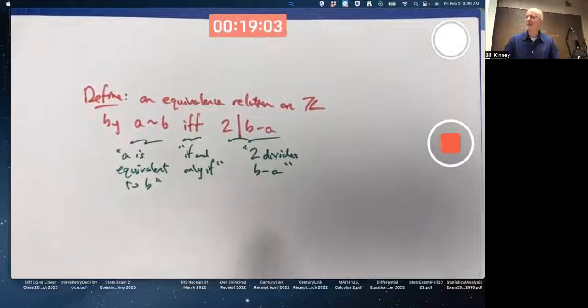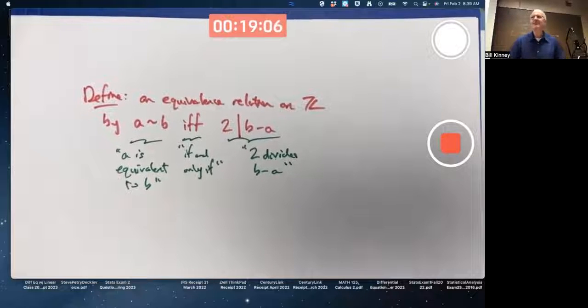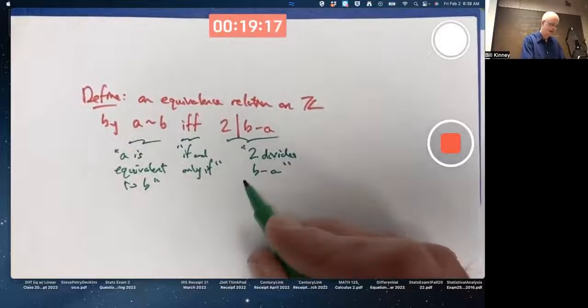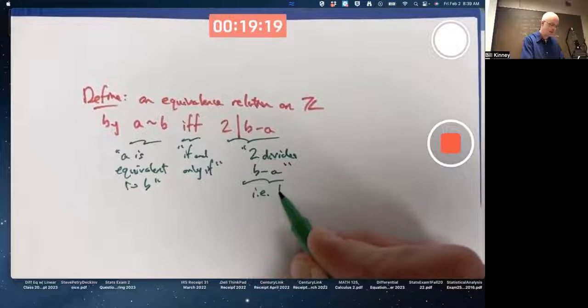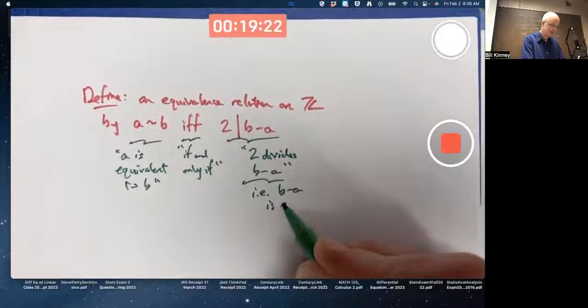Wait, what am I doing there? Am I saying take two and divide by B minus A? No. I'm saying two divides evenly into B minus A, you might even say. In other words, B minus A is even. I.e., B minus A is even.